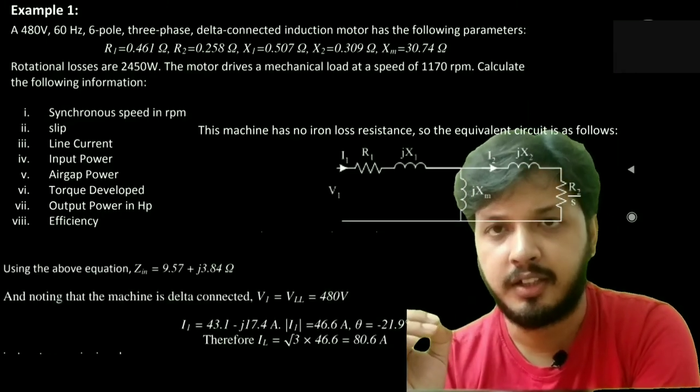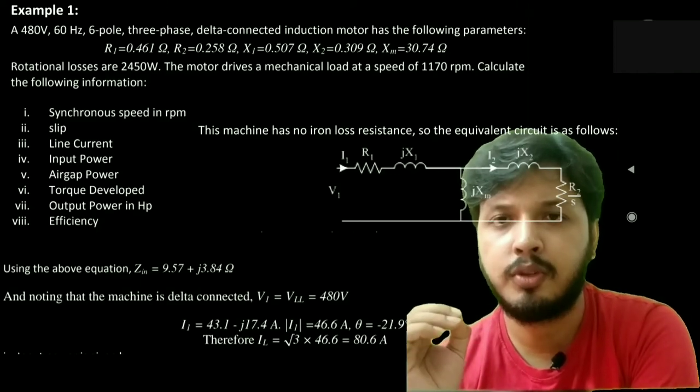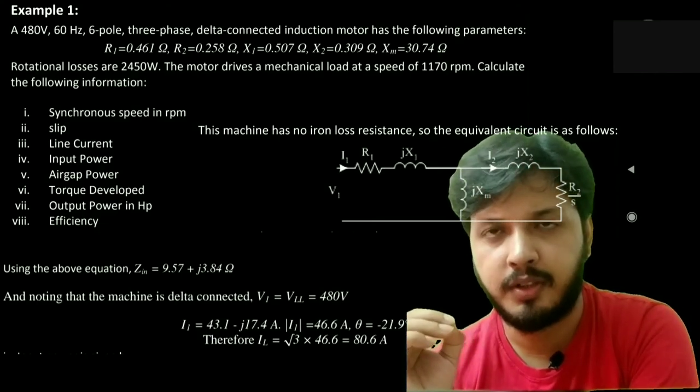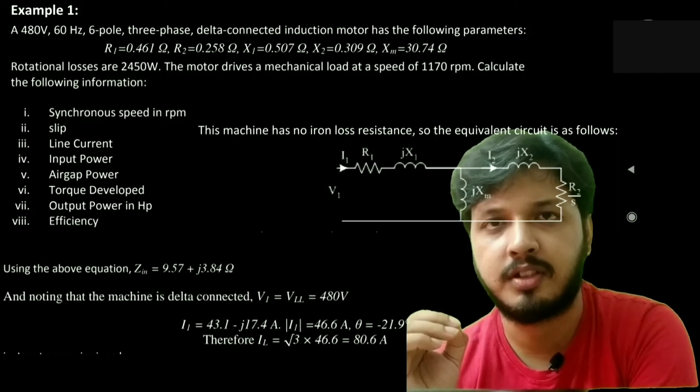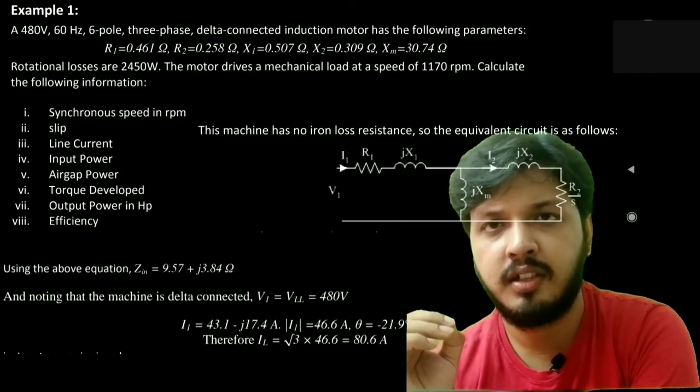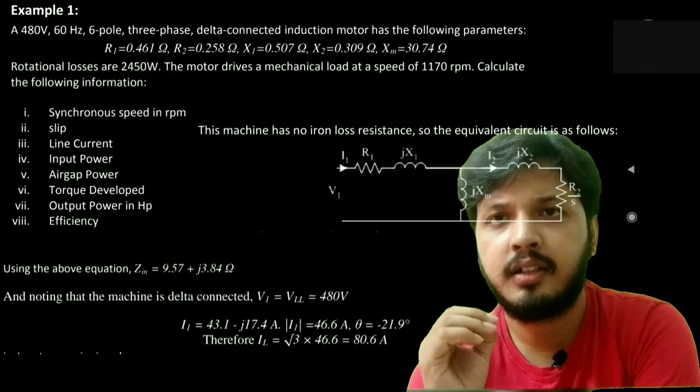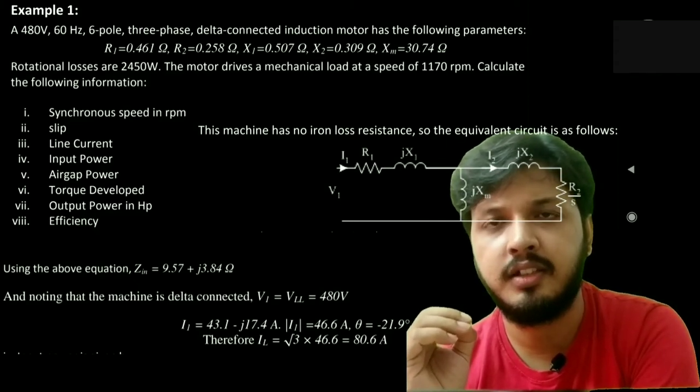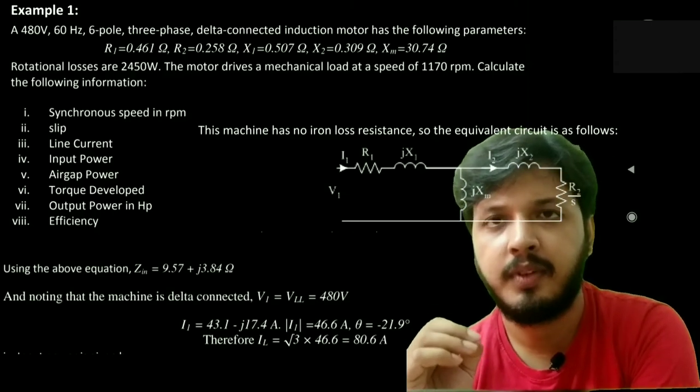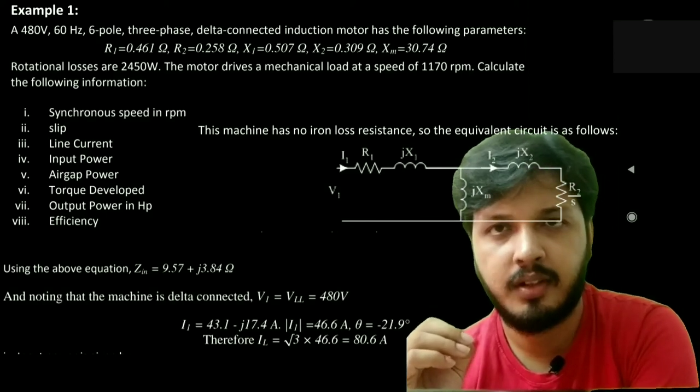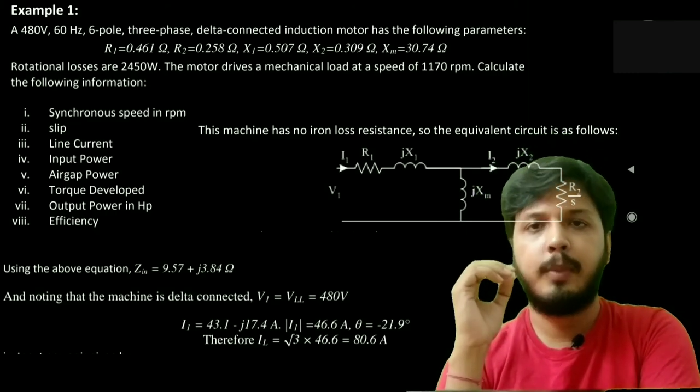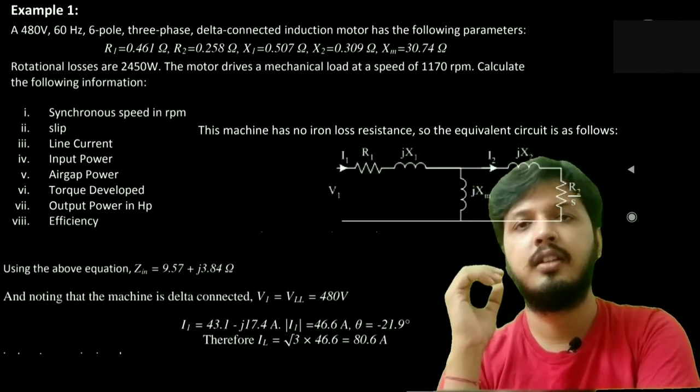Now the machine is delta connected, so its line and phase voltage both are equal, that is 480 volt. Putting the value of voltage 480 volt and impedance 9.57 plus j3.84 ohm, we'll find that I1 will be 43.1 minus j17.4 ampere. Taking the magnitude of I1, we'll get that it is 46.6 ampere and theta is minus 21.9 degree. This minus sign indicates that current is lagging the voltage. As this is delta connected, the line current will be root 3 times phase current.